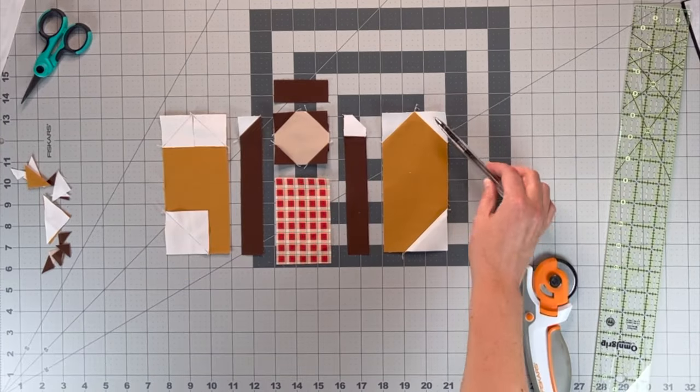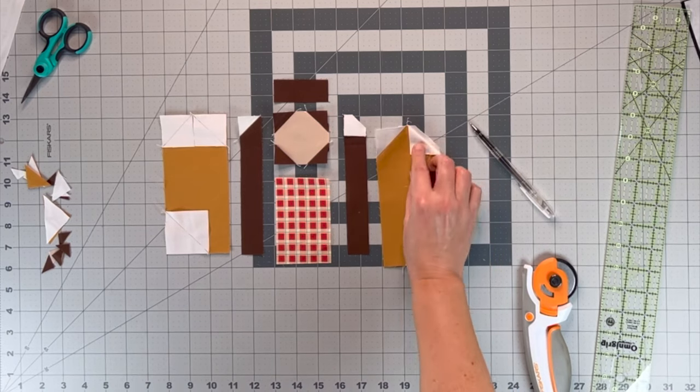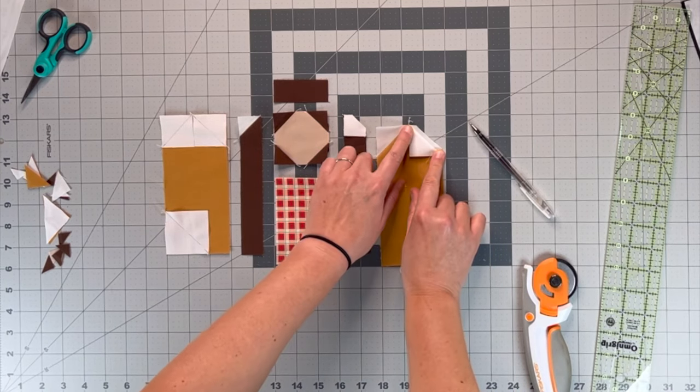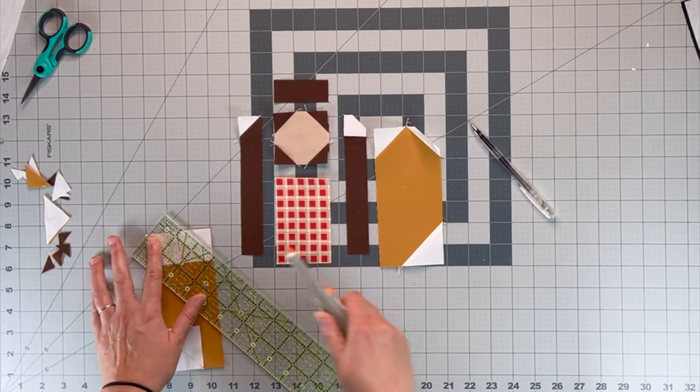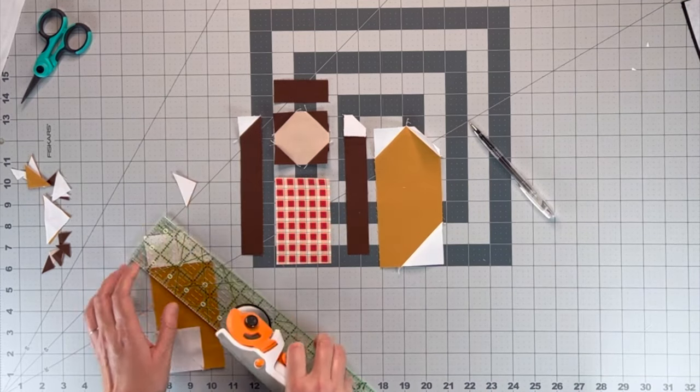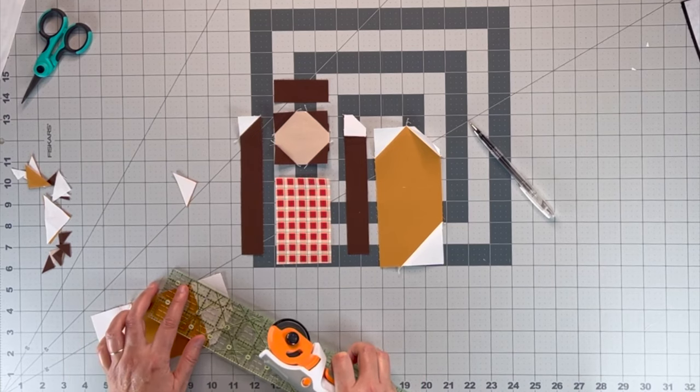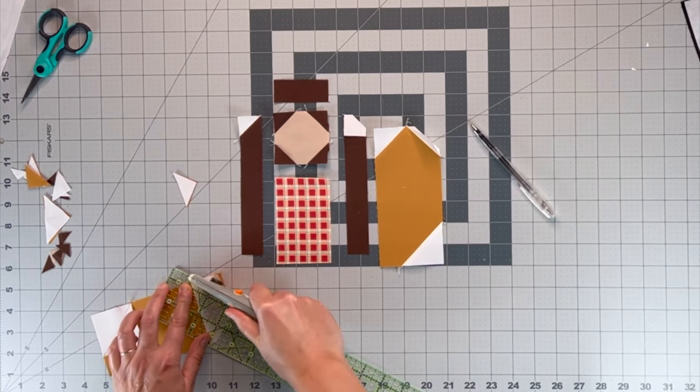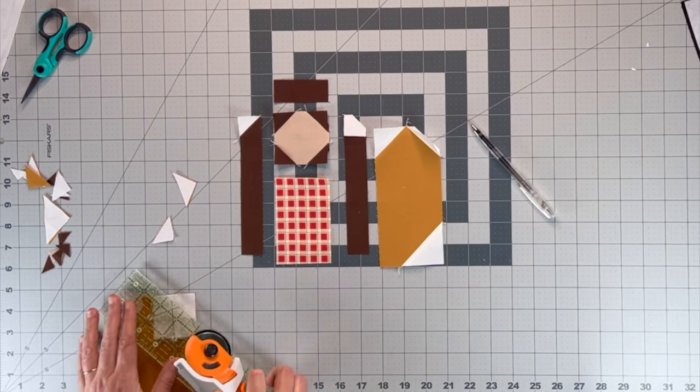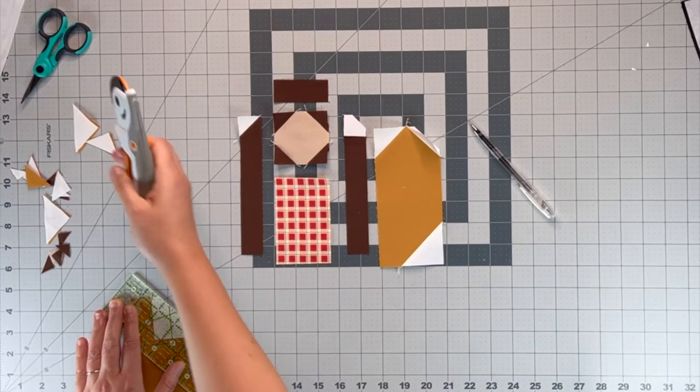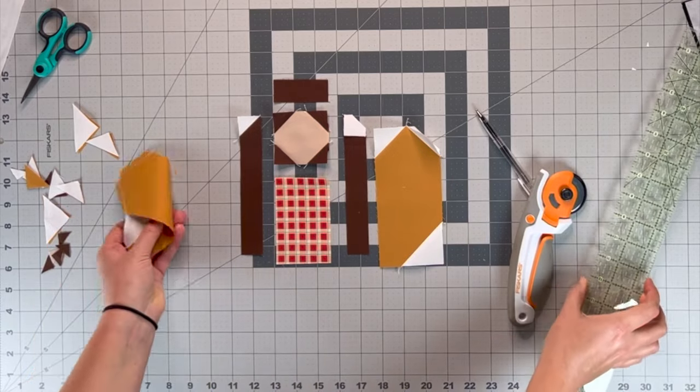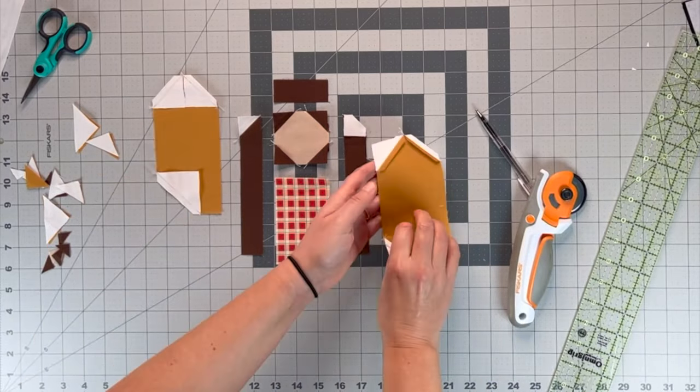Now we have all the seams done. And I have trimmed the seam allowance to a quarter of an inch. Which I just take a ruler, trim all these seams to a quarter of an inch. Then I press everything open.